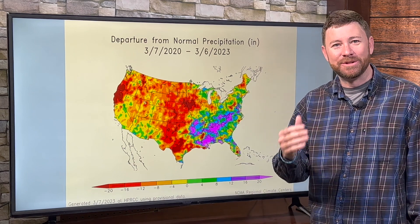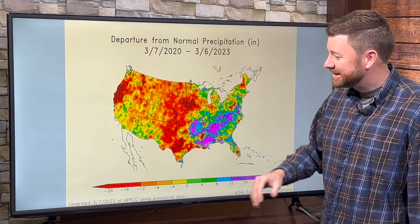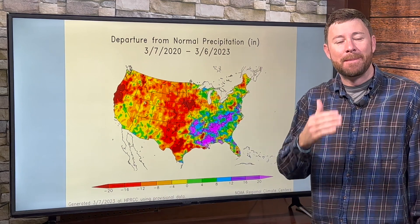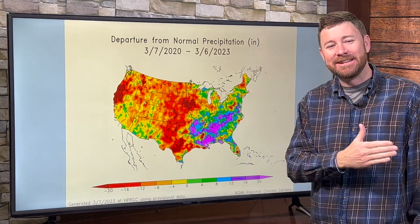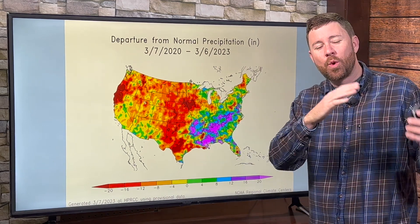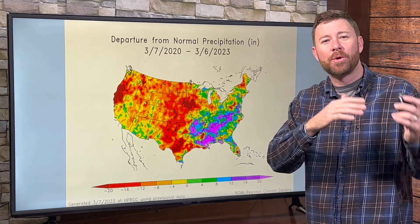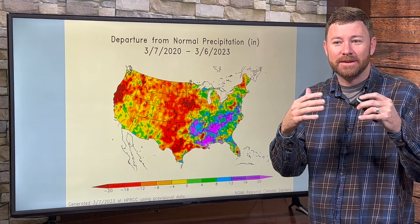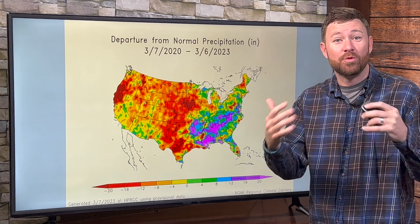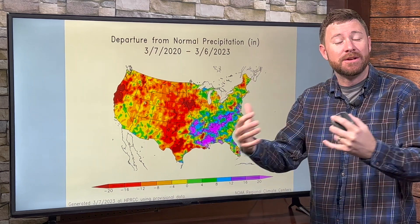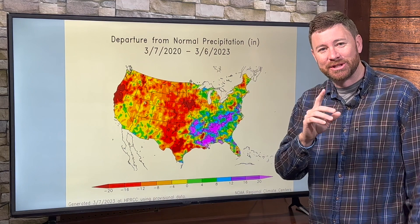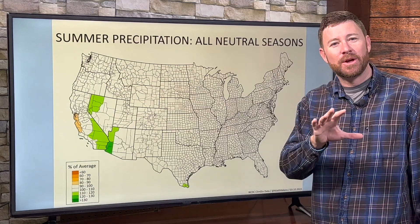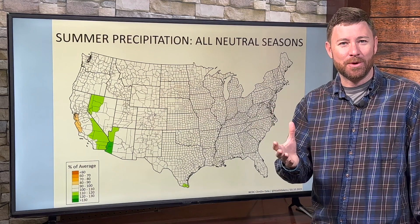That is quite a hole to dig out of. It's going to take time for the central and southern plains particularly to come out of this. But by leaving La Nina behind, we're turning the corner on the pattern, turning the corner on the drought. I believe in a lot of cases the drought is the worst it will be right now, and we'll see improvements going forward. The slowest improvements will probably happen in the central and southern plains.